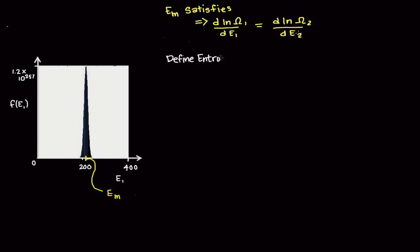So, let's define a new macro parameter, S, called entropy. The KB is Boltzmann's constant. We'll explain why we include it later. By defining this new term, entropy, our condition above occurs when the derivative of the entropy of box 1 with respect to the energy of box 1 is equal to the derivative of the entropy of box 2 with respect to the energy of box 2.